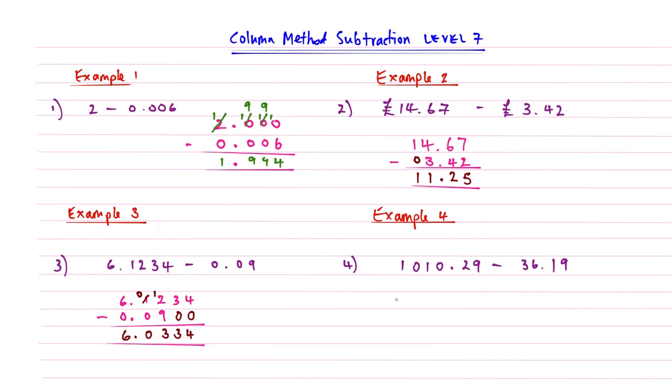Example 4: 1010.29 subtract 36.19. Line these up. This should be making sense to you now. 9 subtract 9 is nothing, 2 subtract 1 is 1. Line up your decimal points. That makes me happy.